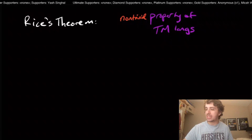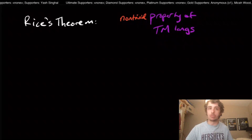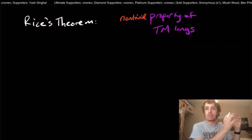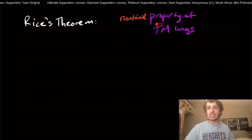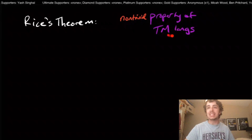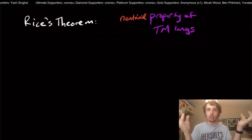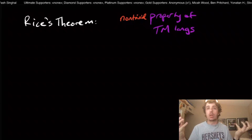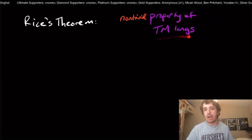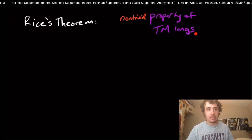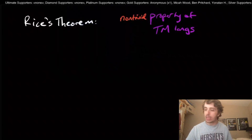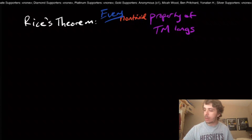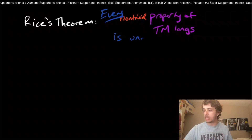The important thing is that it's a property of Turing machine languages — if you have two Turing machines with the same language, either both have the property or both don't. The only thing that matters is what the language of the Turing machine is. If there's a qualification on the number of states, for example, then it's not really a property of Turing machine languages. So what does Rice's theorem say? Every non-trivial property of Turing machine languages is undecidable.